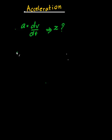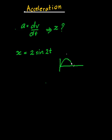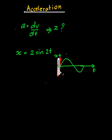Let me start with a simple example. A particle moves with motion described by x = 2sin(2t). If I draw the sine curve, the horizontal axis is time and the vertical axis is x. Starting from zero, it goes in one direction and then comes back — it's basically a particle oscillating back and forth about zero, just keep doing this and so on.